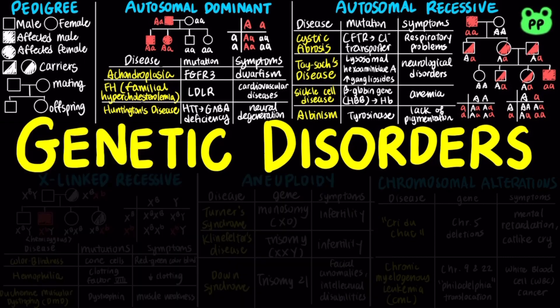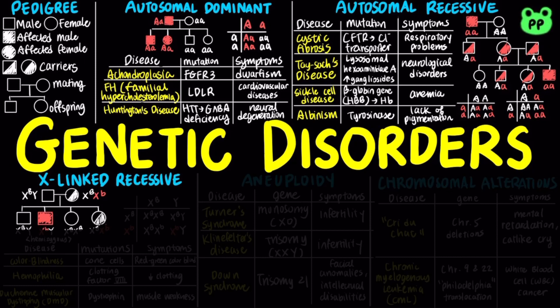Some disorders are caused by recessive alleles on the X chromosome. X-linked recessive disorders are much more common in males than in females, because a female needs two copies of the allele to express the disease, while the male needs only one copy of the allele, known as hemizygous.